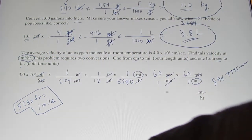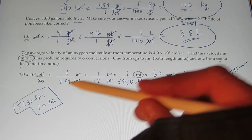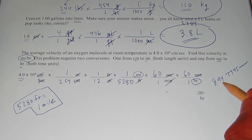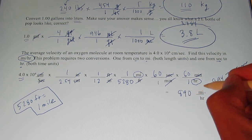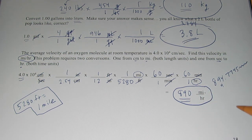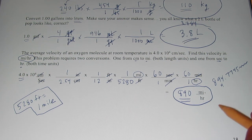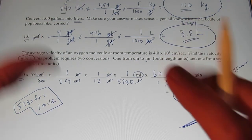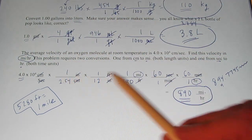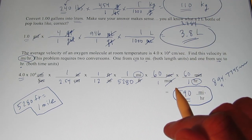The calculator gives 894.7745... The conversion factors are all definitions with infinite sig figs, but 4.0×10⁴ only has two sig figs, so we round to two significant figures: 894.77 rounds to 890 miles per hour. That's almost 900 miles per hour — that's how fast an oxygen molecule travels at room temperature. Hope this helped. The math here is really just multiplication and division, so stick with it and we'll get through dimensional analysis together.